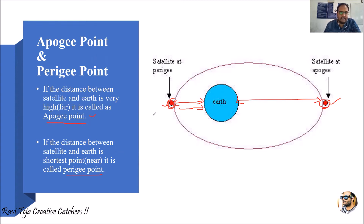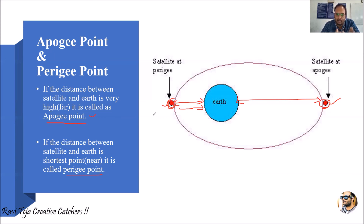These two points are defined based on the position of the satellites with respect to the earth when they are moving in the elliptical orbit. Satellites in an orbital path revolve around the earth in an elliptical manner. Few satellites will be nearer to the earth and few will be far away. If satellites are far away from the earth, that point is called the apogee point, and if the satellite is very close to the earth, it is called the perigee point.